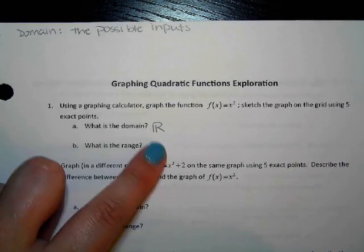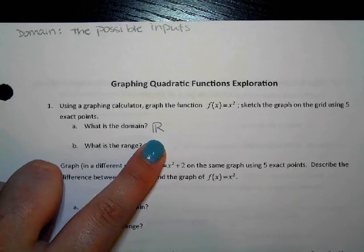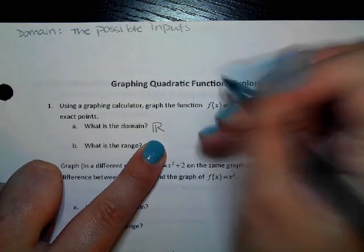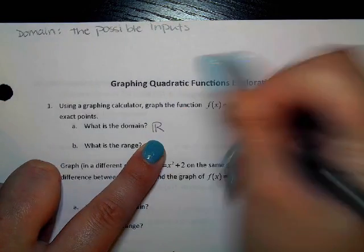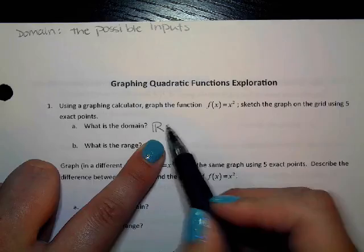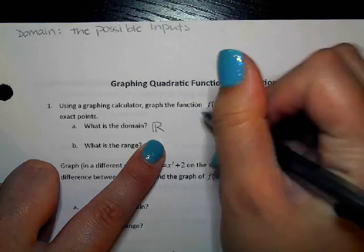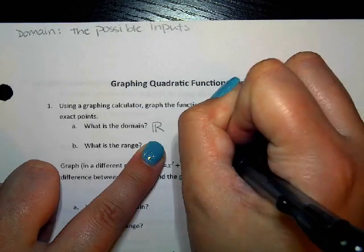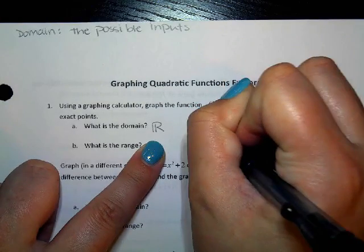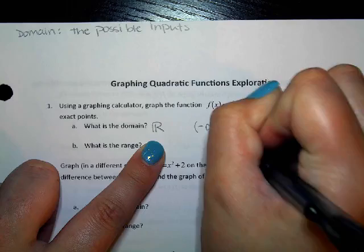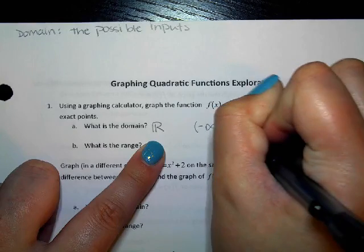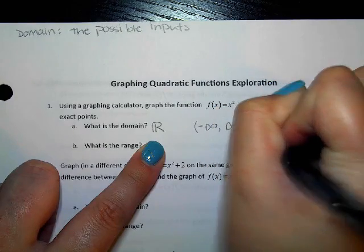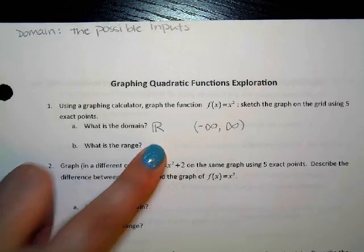So this is what we have so far. What is the domain? All real numbers. You can write it like that, or — this is called set notation. The interval notation is negative infinity to positive infinity, like this.